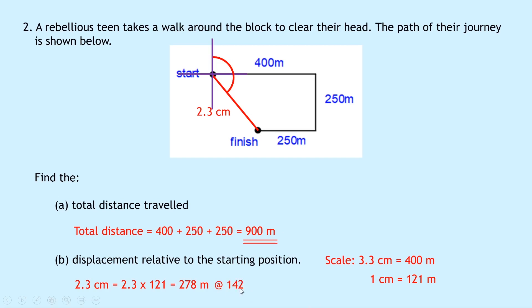So that means that our bearing is 142. And that's me got my magnitude and my direction. So 278 metres at a bearing of 142.